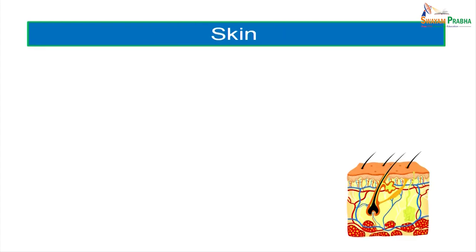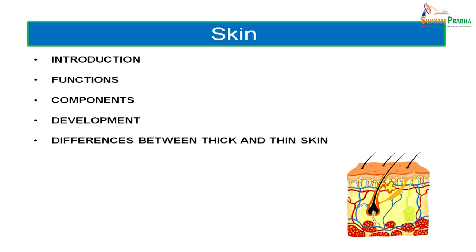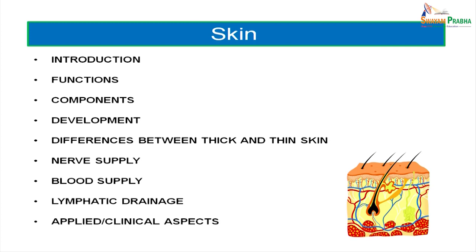We will be talking about the skin — briefly introducing it pertaining to its functions, components, development, differences between thick and thin skin, the nerve supply, blood supply, lymphatic drainage, and a few clinical aspects. Skin is the biggest organ of the body. It is the largest sensory organ too. It contributes to about 16% of the total body weight and 8% of the total body mass. The surface area of skin accounts for about 1 to 2 meters square, and the thickness varies from 0.3 mm to 3 millimeters.